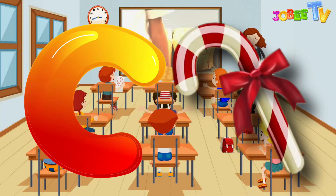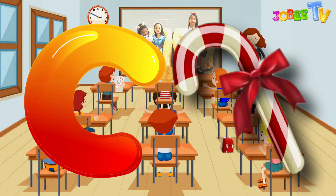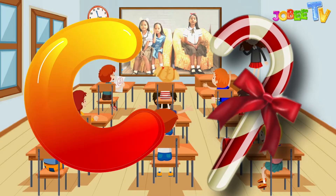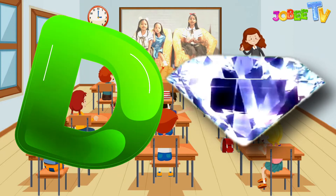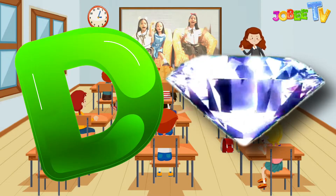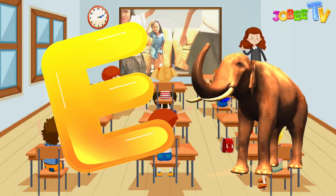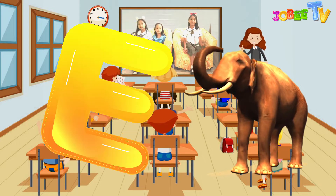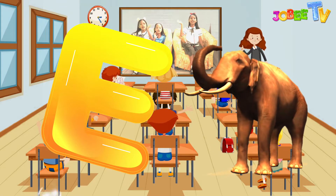C is for candy, C-C-candy, C-C-candy, C-candy. D is for diamond, D-D-diamond, D-D-diamond, D-diamond. E is for elephant, E-E-elephant, E-E-elephant, E-elephant.